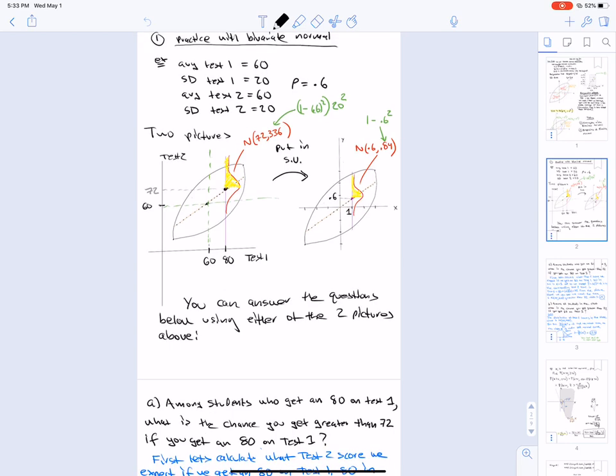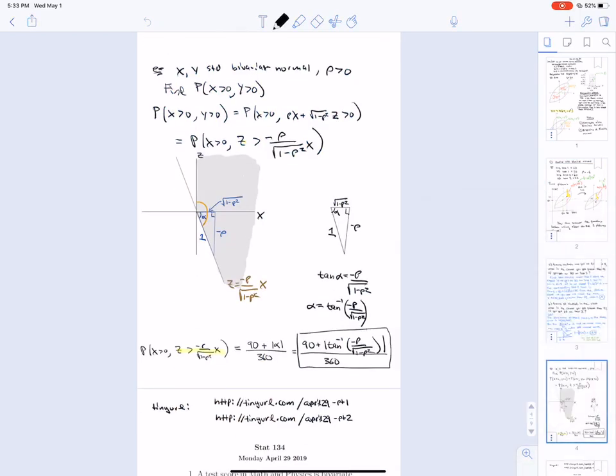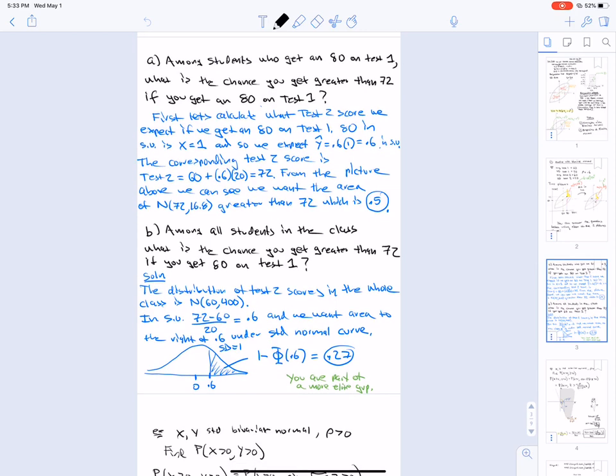So the distribution for test 2, we know it's 60, 20 squared. So in standard units, 72 minus 60 over 20 is 0.6. So we want the area to the right of 0.6 because we're looking at people who get greater than 72 or greater than 0.6 in standard units.